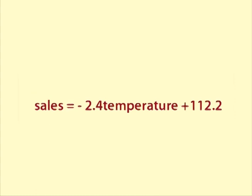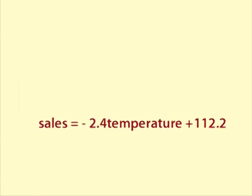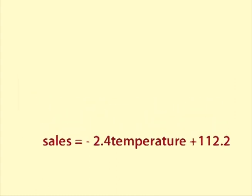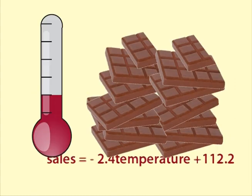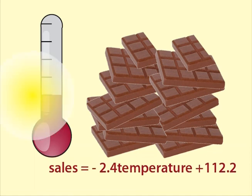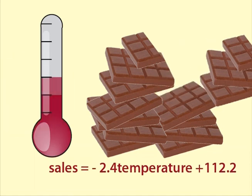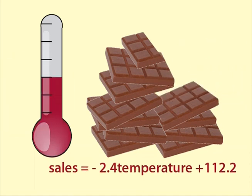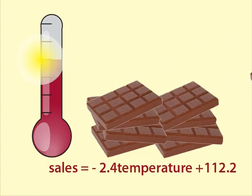The slope value, negative 2.4, tells us that for each extra degree of temperature, the daily sales decrease by 2.4 packets of Choconuttis on average.